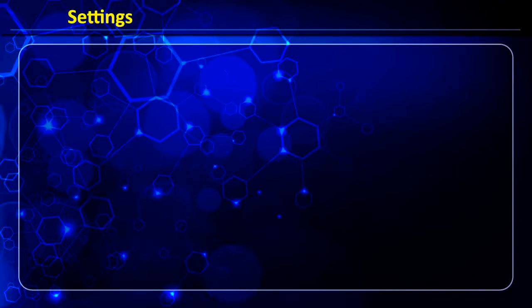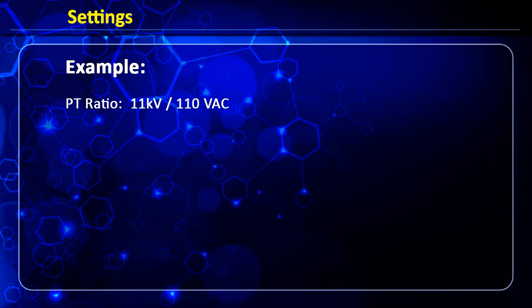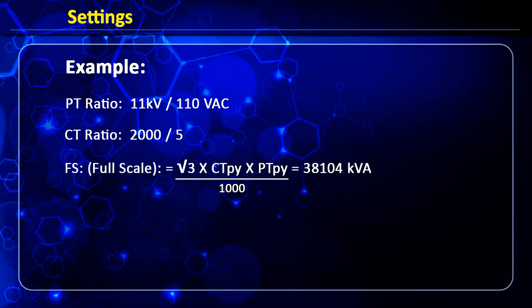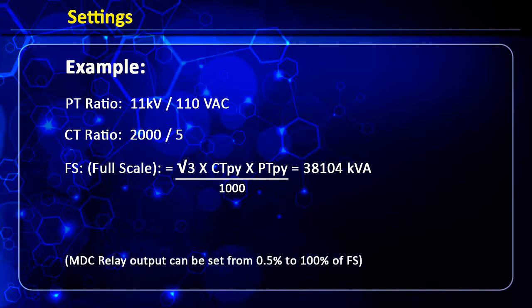For this video we will take examples where we have a PT ratio of 11 kV by 110 and CT ratio of 2000/5. While programming, the internal algorithm of the meter uses the full-scale value — that is, root 3 of CT primary multiplied by PT primary divided by 1000 — as the maximum value at which the MD controller can be programmed. The relay outputs can be set from 0.5% to 100% of full scale.